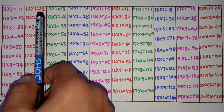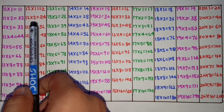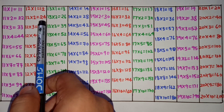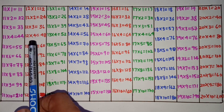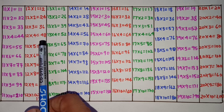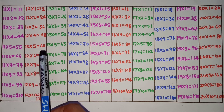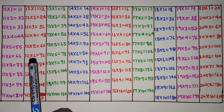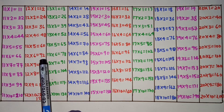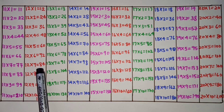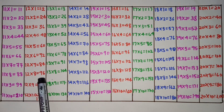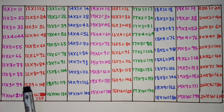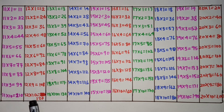12 ones are 12, 12 twos are 24, 12 threes are 36, 12 fours are 48, 12 fives are 60, 12 sixes are 72, 12 sevens are 84, 12 eights are 96, 12 nines are 108, 12 tens are 120.